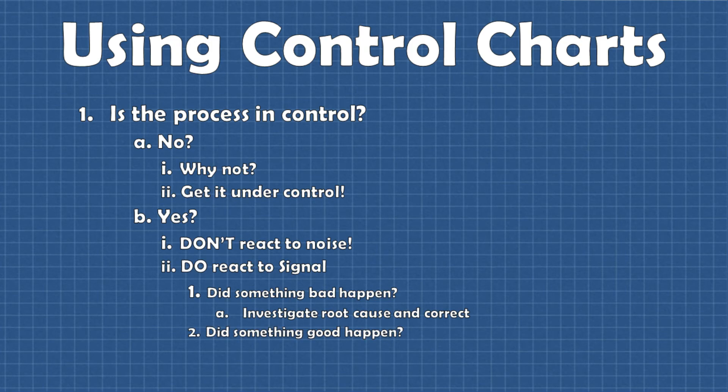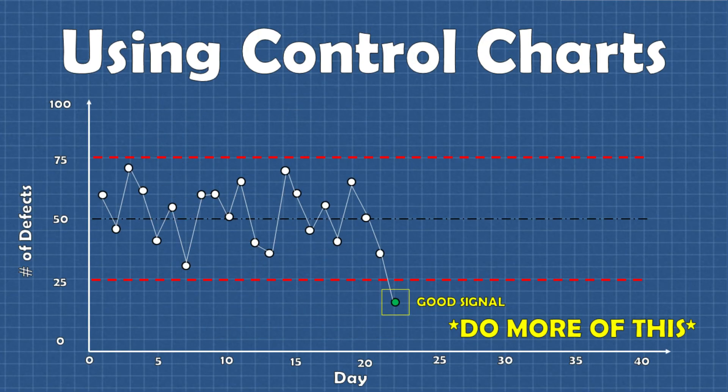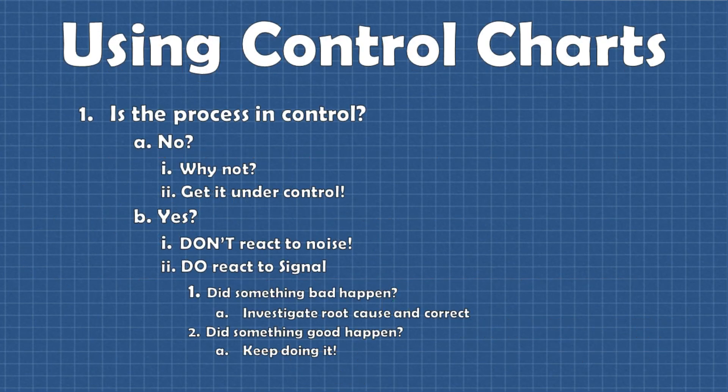But what if we do want the process to shift in one direction? If we were measuring something like defects we would want to see defects go down. So if we have a process that is in control and we get a signal that is below the lower control limit that means something good happened. Either we made a change on purpose and now we have an indication that the change is working or there was a change that we didn't know about and we should investigate it so we can do more of it.